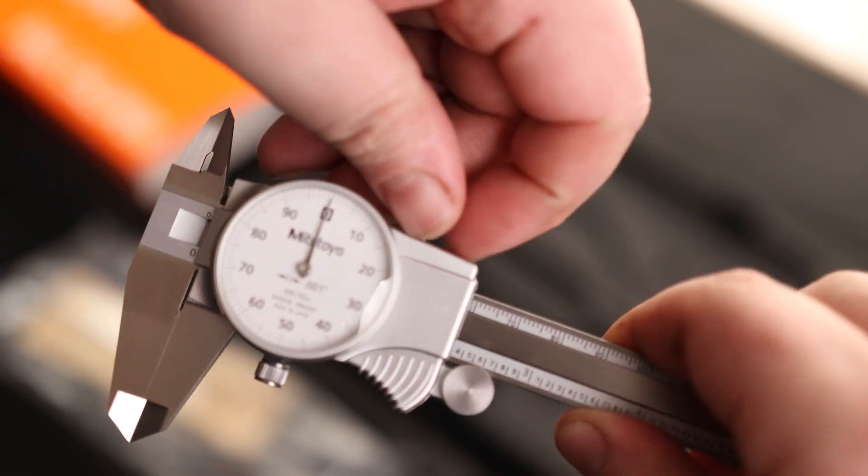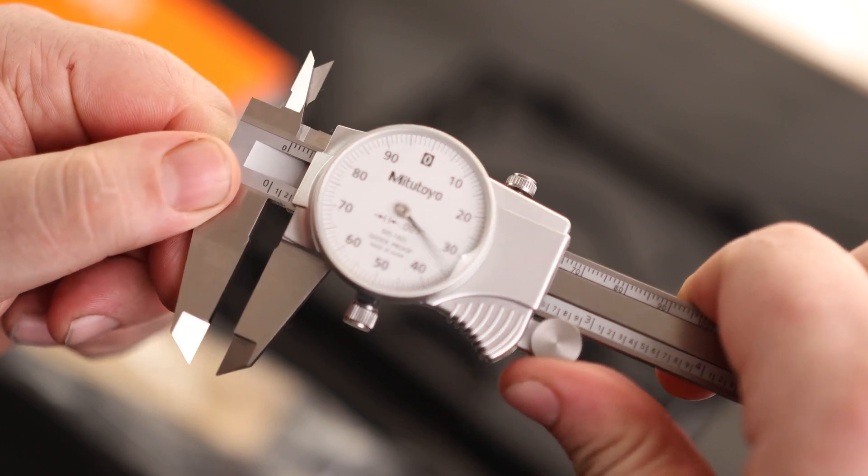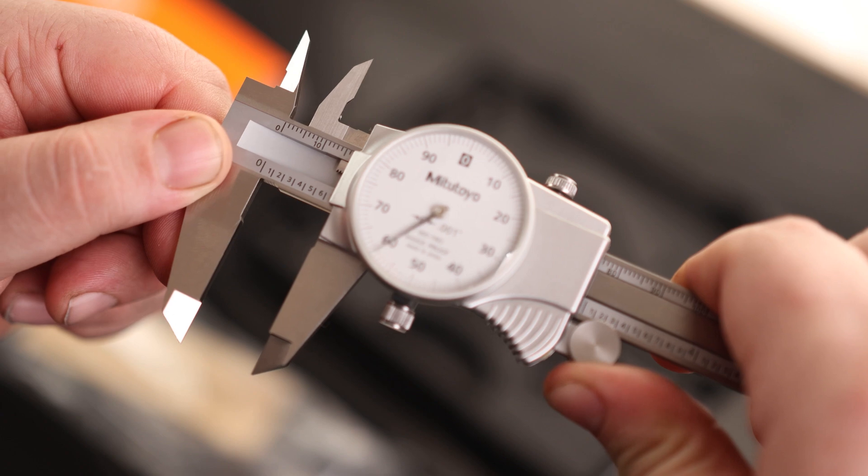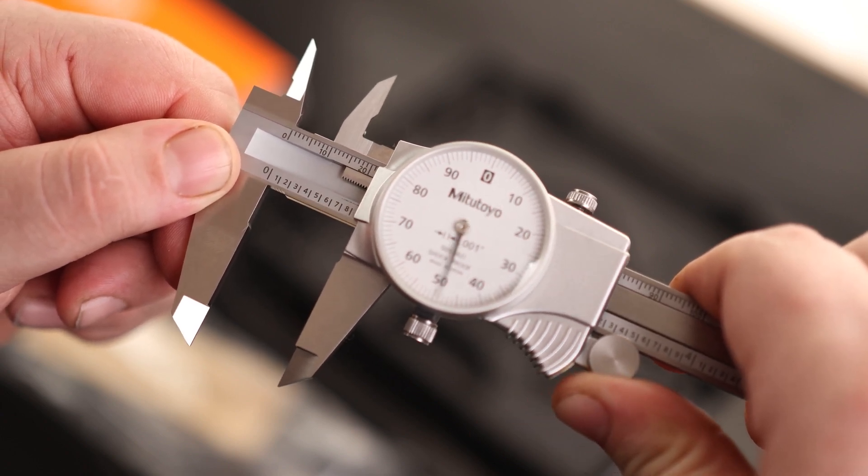So we are locked. We are zeroed. Loosen this guy up. Look at that swing. That is going to make getting super fine measurements very easy.